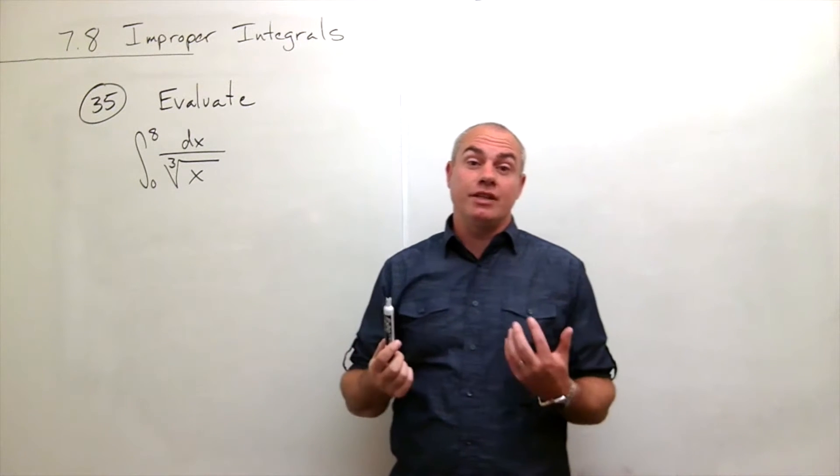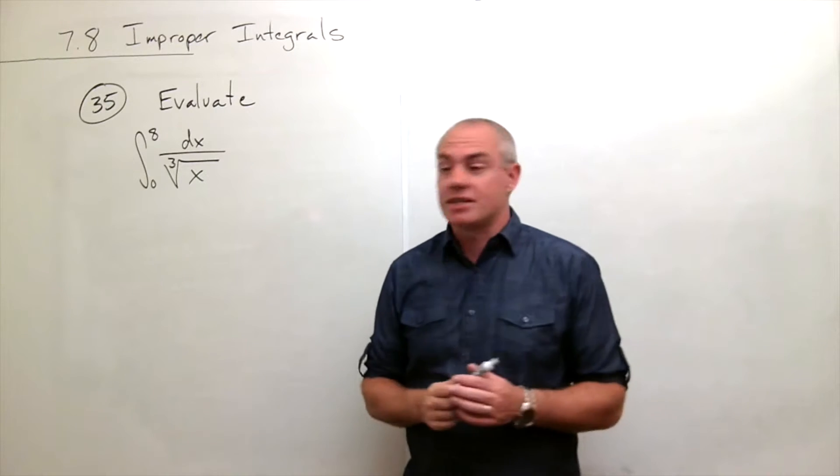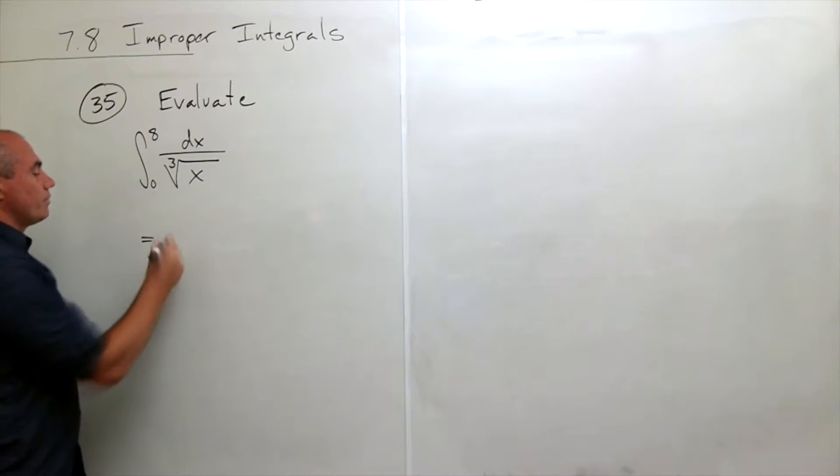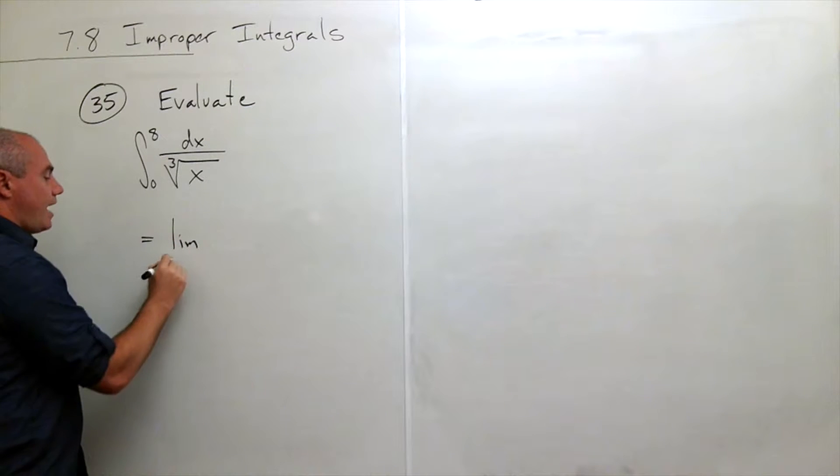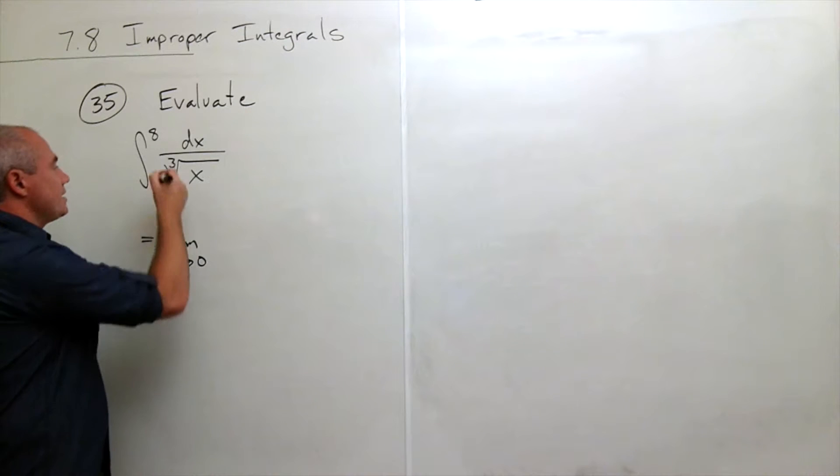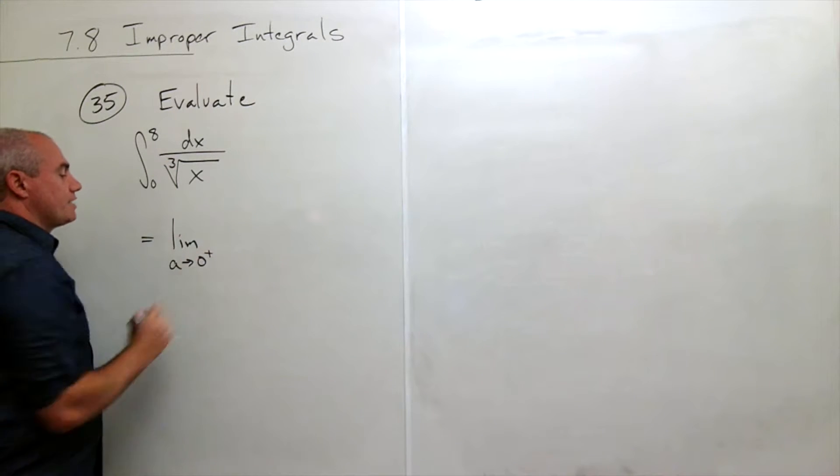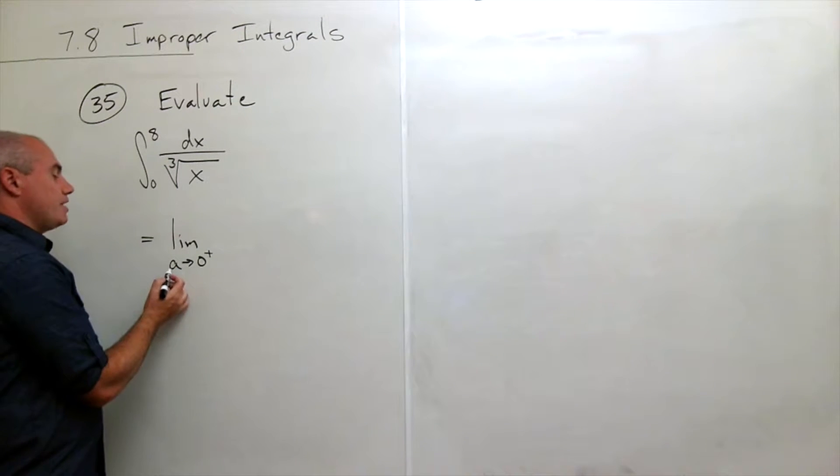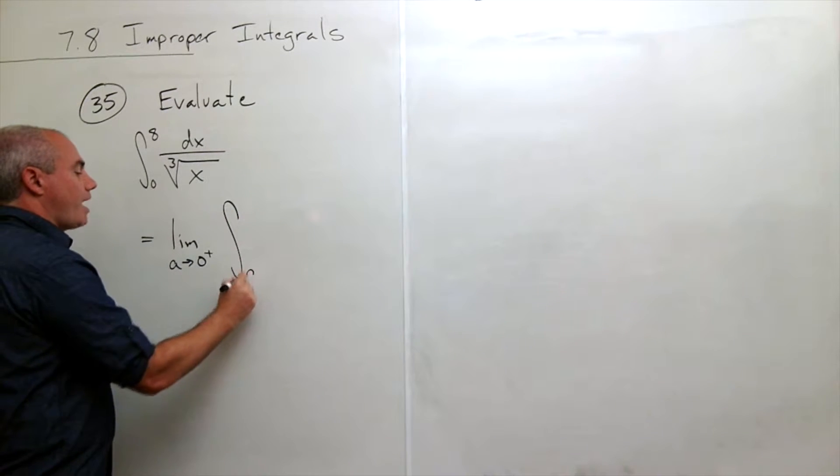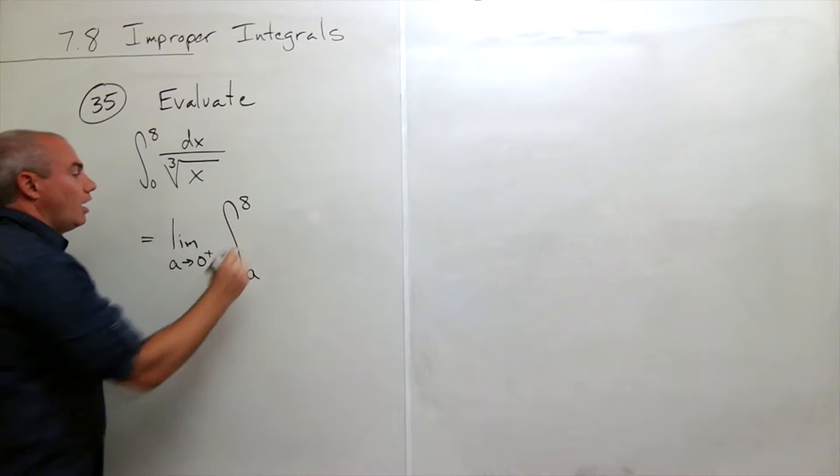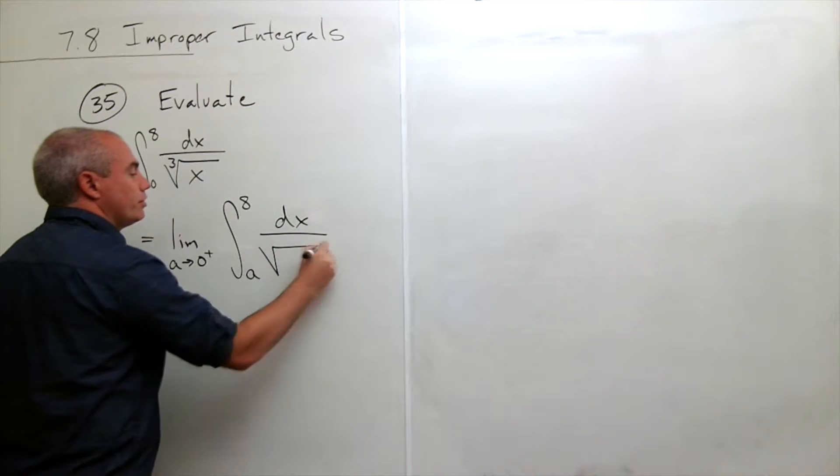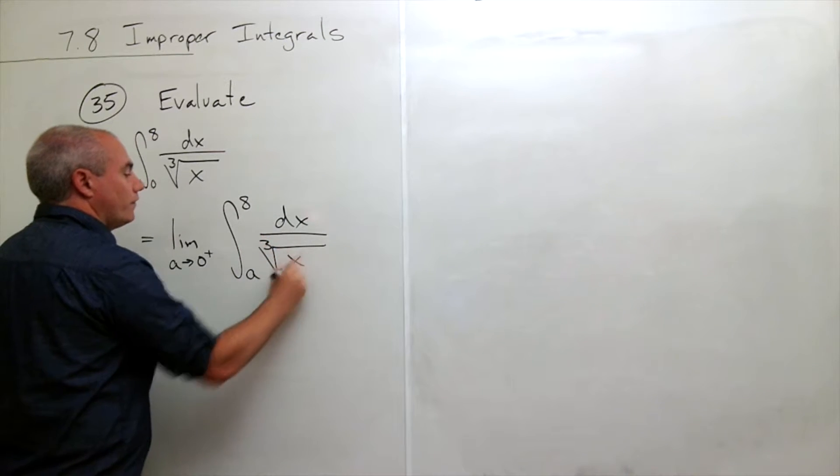So what we need to do is we still need to write this guy as a limit, but it's going to be a little bit different. So let's write it. So I'm going to take this guy, this is the limit as a goes to 0 and what side is it coming from? It's coming from the right side. So I'm taking the limit as a goes to 0 from the right of the integral from a to 8 of dx over the cube root of x.